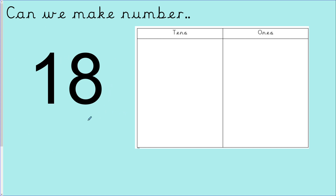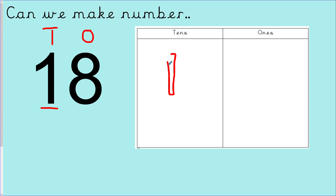Moving on to the next one — I will do this one with you. Our number is 18. We are looking at how many tens and how many ones are in the number 18. We have our tens and we have our ones. How many groups of ten do we have? We only have one. So I am only going to draw one group of ten. How many ones do I have? I have 8. I have to draw 8 ones.